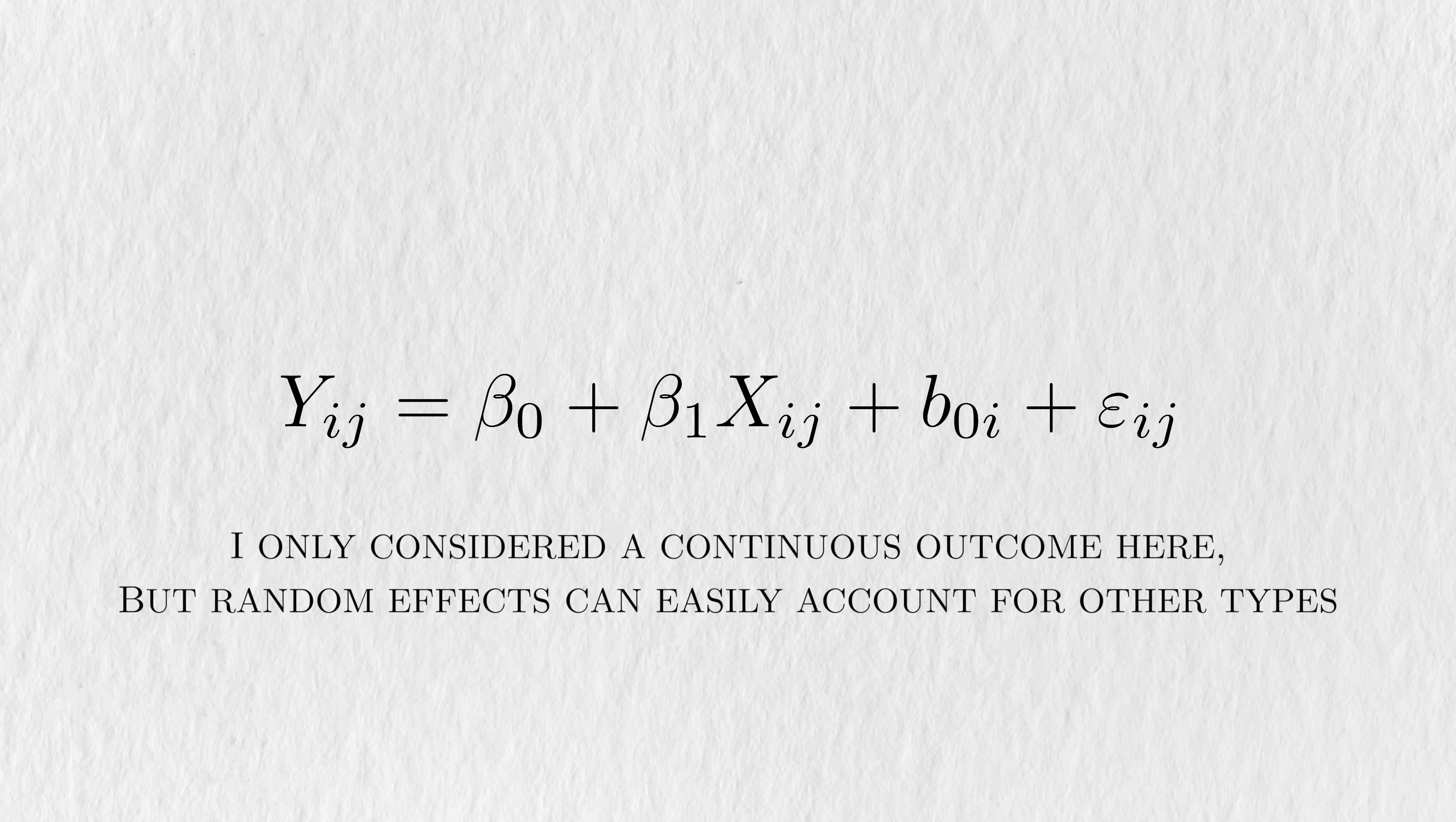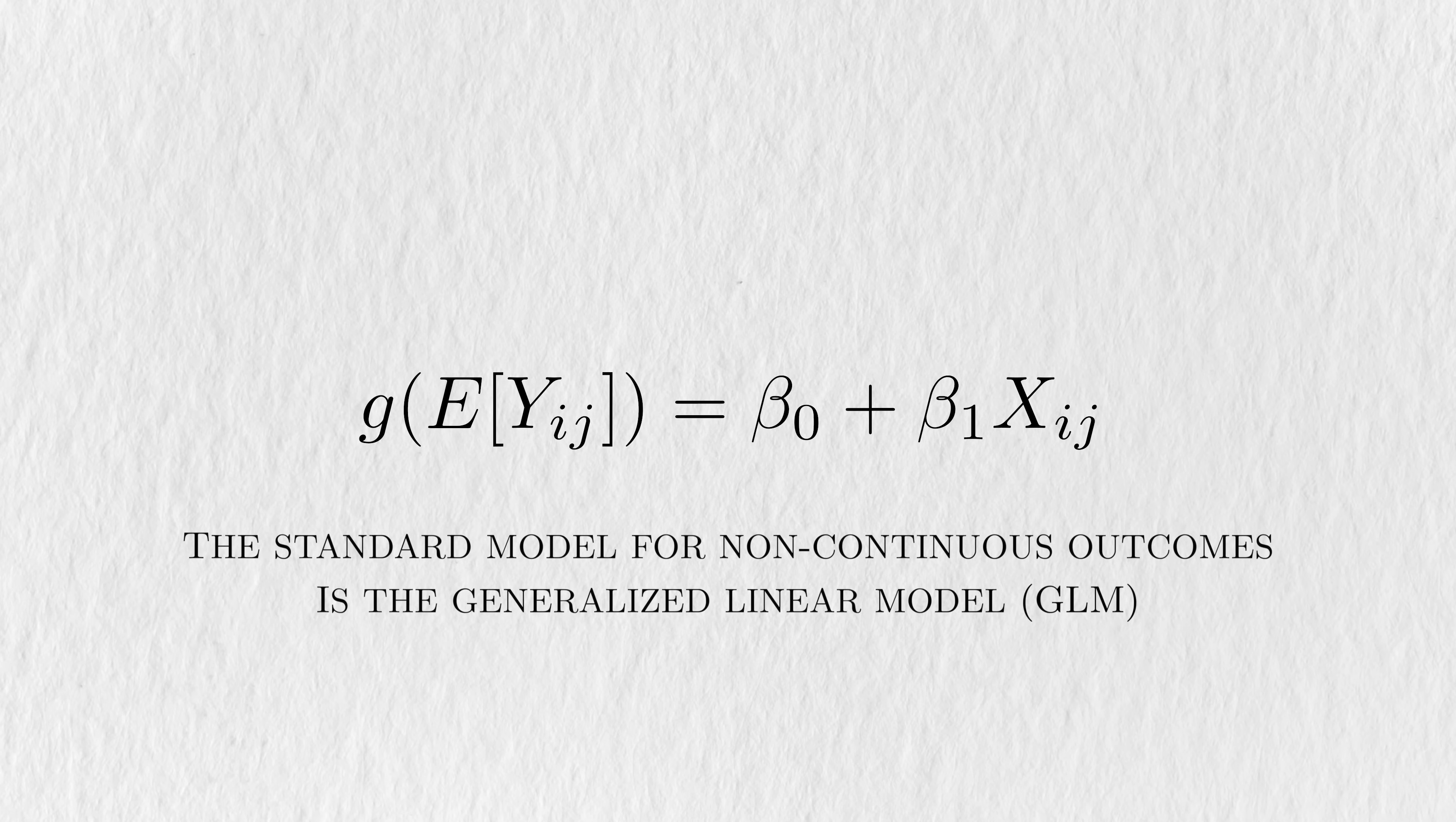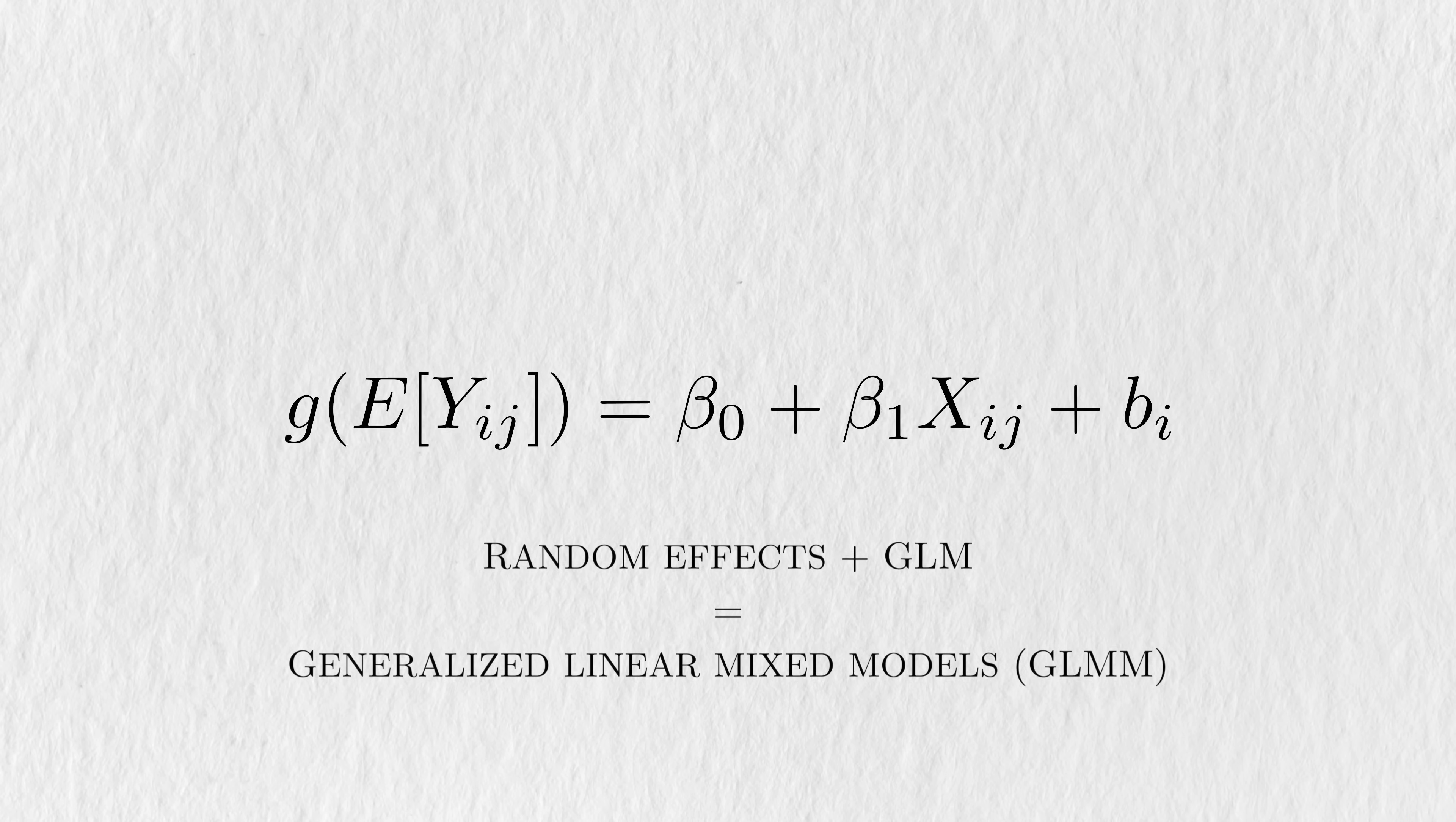I only considered continuous outcomes here, but random effects models can easily account for binary or count outcomes as well. The standard model for non-continuous outcomes is the generalized linear model, or GLM. By adding random effects to the GLM, we get a generalized linear mixed effects model, or GLMM.